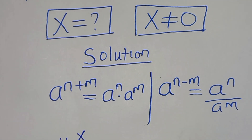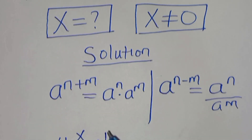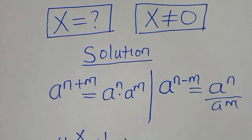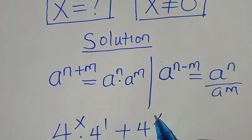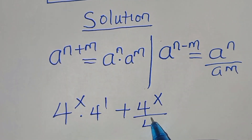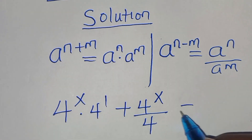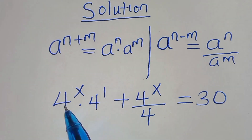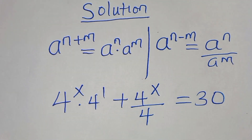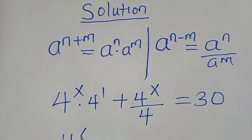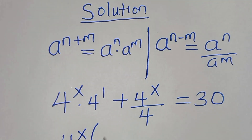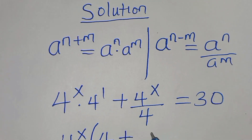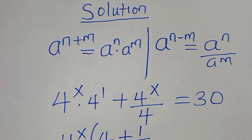So we have 4 to the power of x times 4 to the power of 1, plus 4 to the power of x divided by 4, equals 30. Since 4^x is common here, we can factor out 4^x, so we have 4^x times the quantity 4 plus 1 over 4, equals 30.